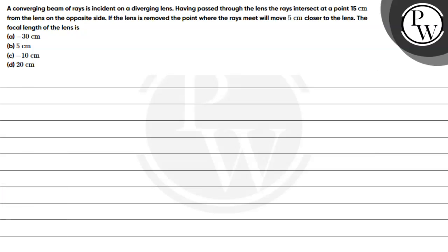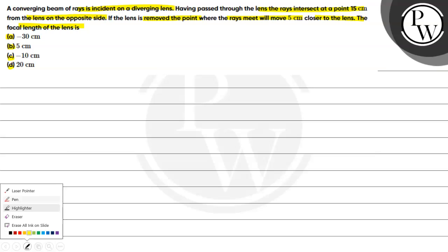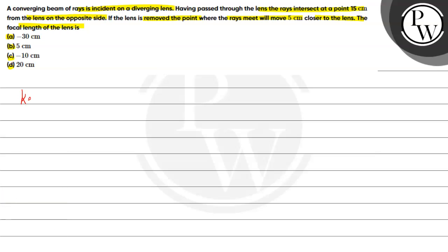Let's read this question. A converging beam of rays is incident on a diverging lens. Having passed through the lens, the rays intersect at a point 15 centimeters from the lens on the projection side. If the lens is removed, the point where the rays meet will move 5 centimeters closer to the lens. We need to find the focal length of the lens. The key concept here is the lens formula.